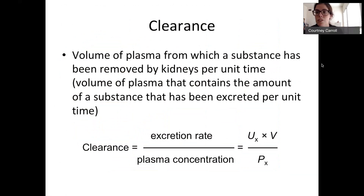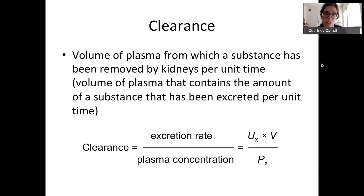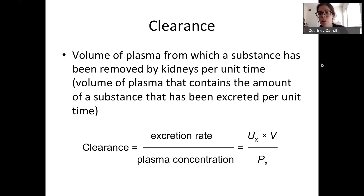This brings us to the key calculation for the whole lab: clearance. Clearance is the volume of plasma from which a substance has been removed by the kidneys per unit time — how much has gone out of the blood into excretion. It depends on two major factors: the excretion rate (how fast you're pulling something from blood into urine, which depends on concentration in urine and volume of urine) and the concentration in the plasma as a reference point. Clearance equals excretion rate over plasma concentration.